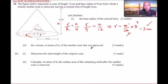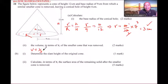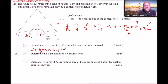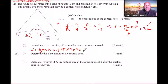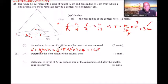For roman numeral two, the volume in terms of pi of the smaller cone that was removed: a cone is a form of prism, so volume equals one-third times base area times height. The base is circular, so base area is pi r squared. With r equals 3 and height equals 4: volume equals one-third times pi times 3 squared times 4. Simplifying: one-third times 9 times 4 equals 12. So the volume is 12π cubic centimeters.